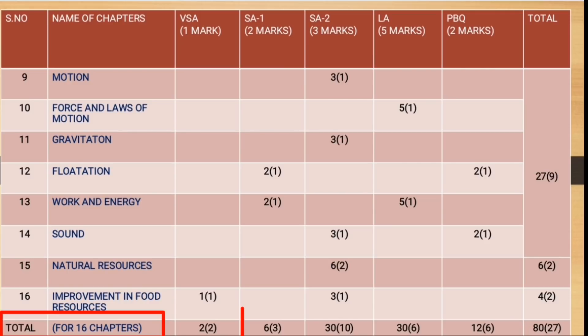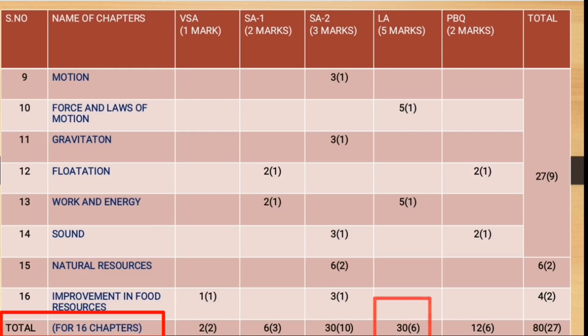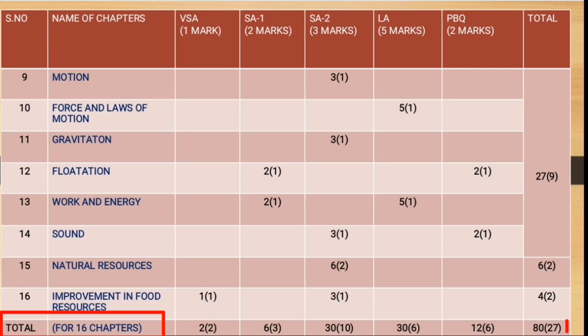There will be a total of 16 chapters for the final exam. All 16 chapters will cover two questions for one mark, three questions for two marks, and ten questions for three marks. There will be six long answer type questions having 30 marks, and a total of six questions from the practical book related to all chapters. The total number of questions will be 27 for 80 marks.